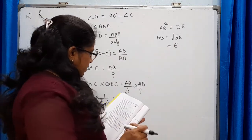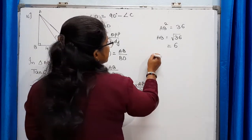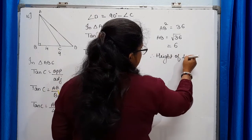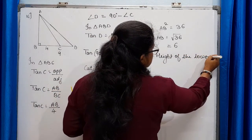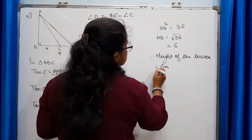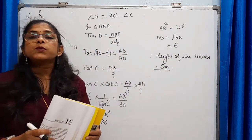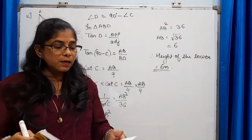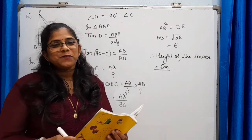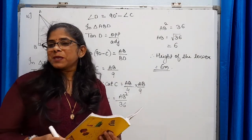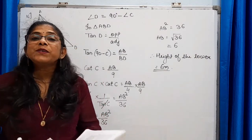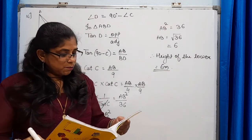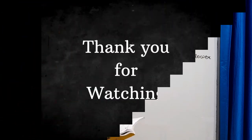Therefore AB equals square root of 36, which is 6. The height of the tower is 6 meters — proved. This completes Exercise 12.1 of Some Applications of Trigonometry, all 16 problems. Please subscribe to Rusharaj Classes for regular updates, and share these videos with students of standard 10. Thank you for watching.